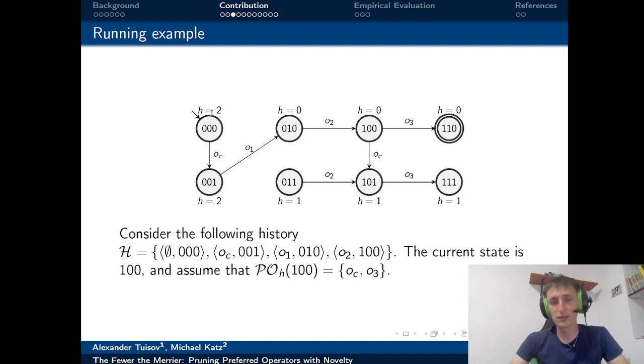Also consider the following history of the operators and states we've observed. We started at state 000, performed operator OC, got to 001, performed O1, got to this state, performed O2 and got to state 100. Please consider 100 to be the one and only state that we have to open up, and assume that the preferred operators in our problem that we can apply here are OC and O3.